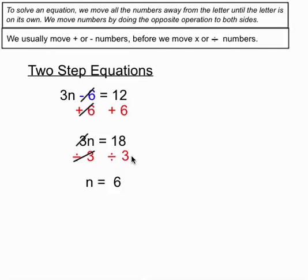So we've moved a total of two numbers away from the letter. We've moved the minus 6 first by doing a plus 6 to both sides. And then in the second step, we've moved a 3 that's multiplying by dividing by 3 both sides. We've got a bit of a pattern happening here.